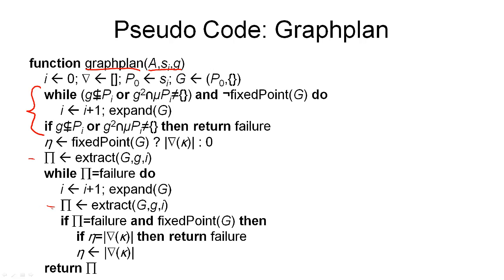And if this fails, we've got to expand the planning graph again. So this loop continues to expand the planning graph, now also doing the backward search in the planning graph. And now in more detail.